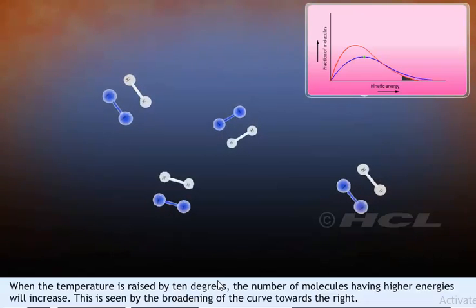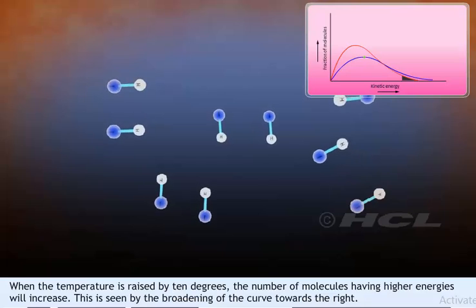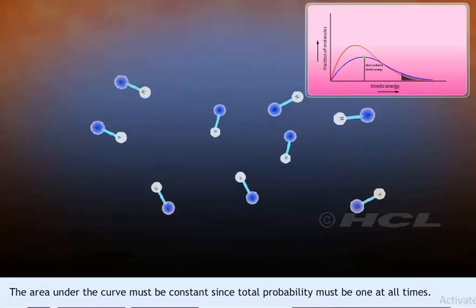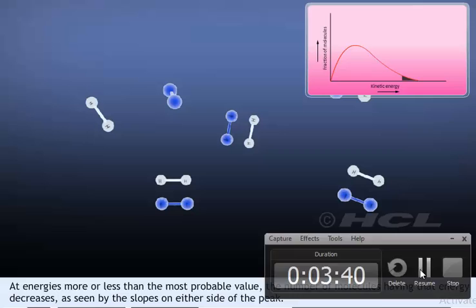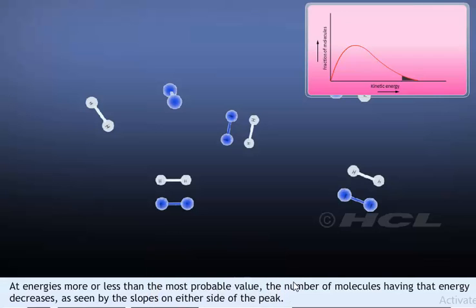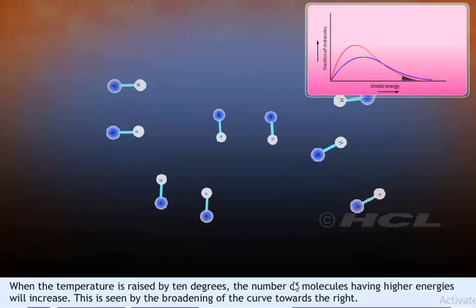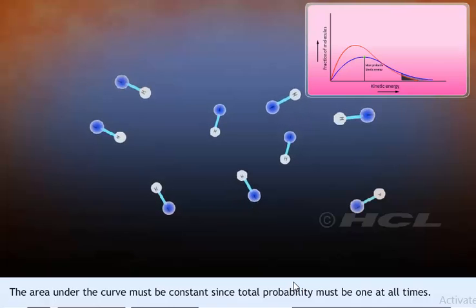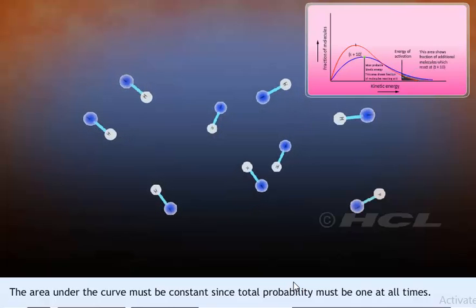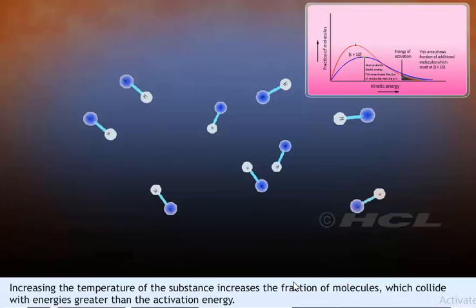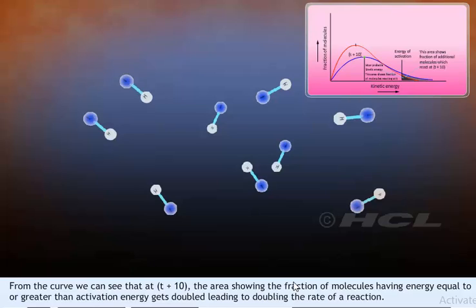When the temperature is raised by 10 degrees, the number of molecules having higher energies increases. This is seen by the broadening of the curve towards the right. The area under the curve must be constant since total probability must be 1 at all times. Increasing the temperature increases the fraction of molecules which collide with energies greater than the activation energy. When temperature is increased by 10 degrees (T plus 10), the area showing the fraction of molecules with energy equal to or greater than the activation energy gets doubled, leading to doubling the rate of reaction.